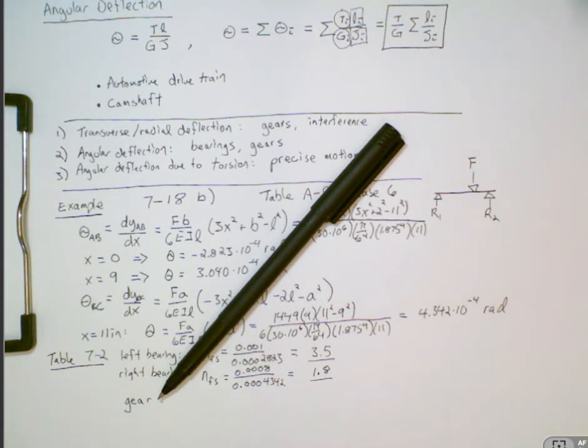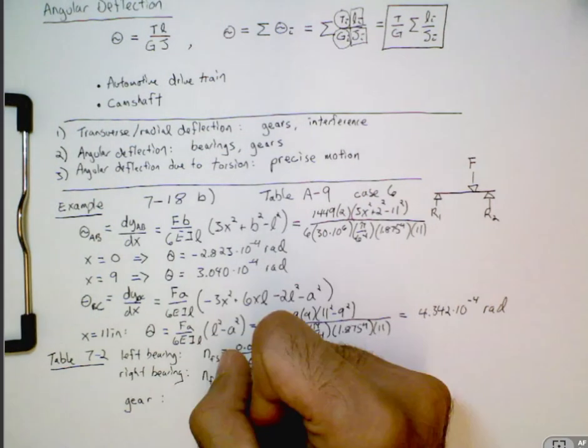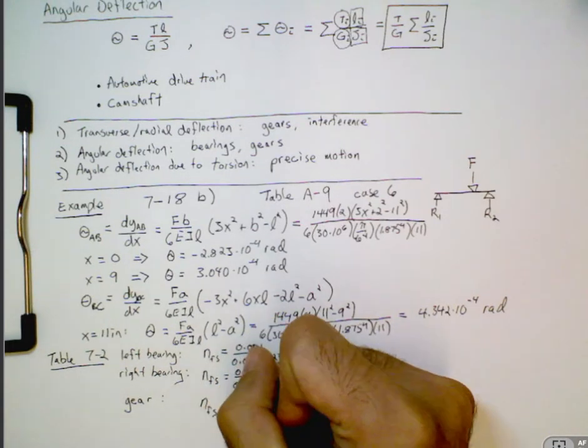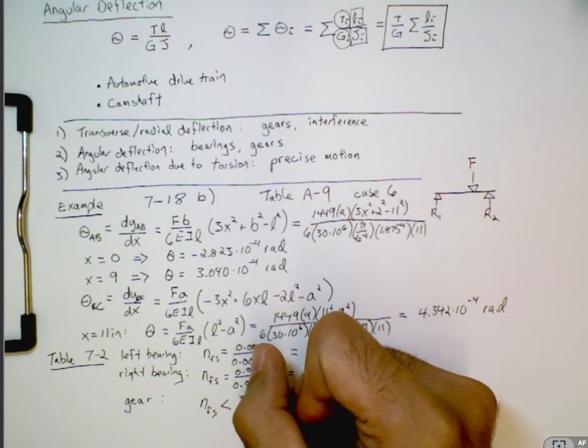So at least for now, all we can do is look at the deflection of this gear. Maybe if we assume the other shaft is really rigid, then this might be acceptable. But really in designing the overall system, we need to consider the interaction between these gears and look at the slope of both of those gears. We can safely say it's going to be less than this value. So this assumes that the other gear doesn't move.